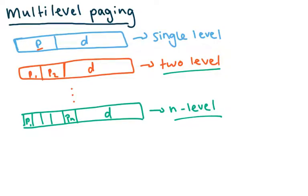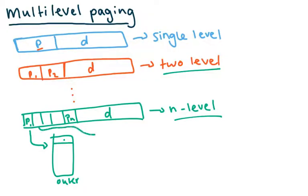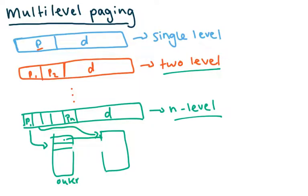Each one of these p's is going to index into a different level of the page table. The first one indexes into an outer page table. Then the second level is going to have a bunch of different page tables, and each one of those is connected to each entry in the outer page table.